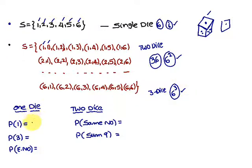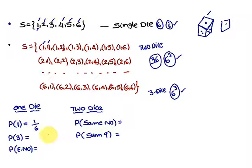So we do the first problem: probability of getting number one. If one die is rolled, the sample space consists of six elements. The number one — you come across with only one. That means one favorable outcome. Therefore, out of six, one is the favorable event. Therefore, probability of one is equal to one by six.